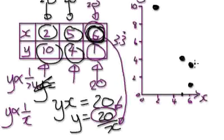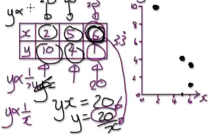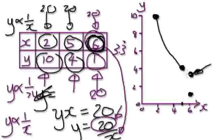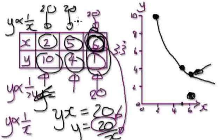But our actual value when X is 6 is Y equals 1, which is way down here on the graph. The graph of Y equals 20 over X would look something like this, and our point should be on it — but our point is somewhere down here instead. So Y is not inversely proportional to X. If that value were 3.3, then it would be — but it's not.